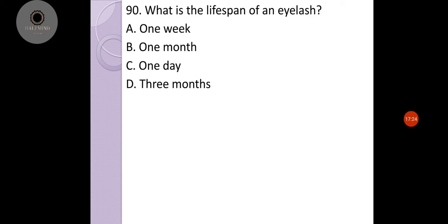Number 90: What is the lifespan of an eyelash? This appeared in previous exams according to those who took it before. The lifespan of an eyelash is three to five months. Even though it says three to five months, we have here three months, so this is the answer we'll choose.